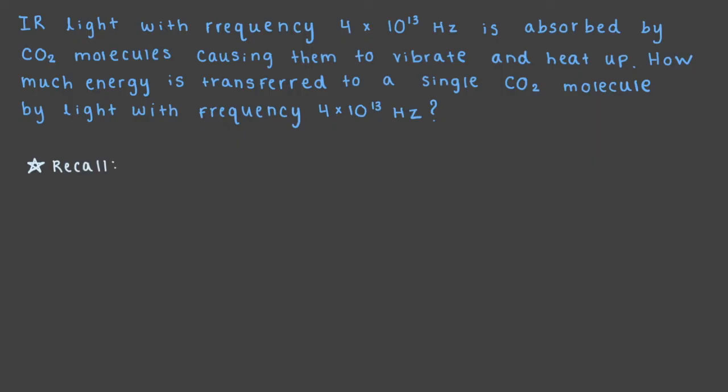Recall that the formula for photon energy is E equals h nu. The infrared light has a frequency of 4 times 10 to the 13 hertz. By plugging in this frequency and Planck's constant into the equation and canceling out our units, we end up with an answer of 3 times 10 to the negative 20 joules.